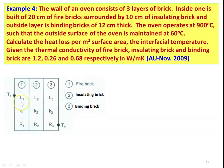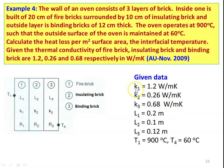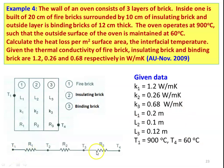For each layer: L1 = 0.2 m, L2 = 0.1 m, L3 = 0.12 m. K1 = 1.2 W/m·K, K2 = 0.26 W/m·K, K3 = 0.68 W/m·K. Draw the thermal circuit with R1, R2, R3 in series. T2 is the interfacial temperature between layers 1 and 2; T3 is the interfacial temperature between layers 2 and 3. Then the problem will be easy to solve.